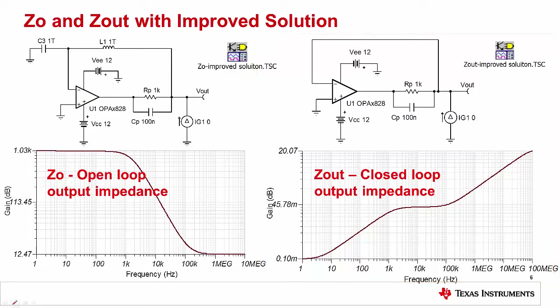The closed loop output impedance curves show that closing the loop around the RP and CP parallel combination reduces the output impedance substantially. Recall from a previous slide that the open loop output impedance is converted to a closed loop output impedance by dividing by 1 plus AOL times beta. At low frequencies, AOL times beta is very high, so the closed loop output impedance is very low. This allows us to effectively drive our load without seeing the large 1 kilohm resistance. During a fault condition, however, the 1 kilohm resistor will still limit the current.